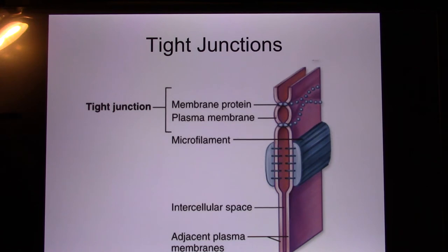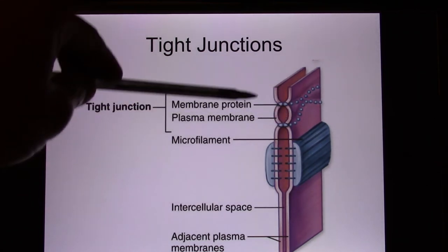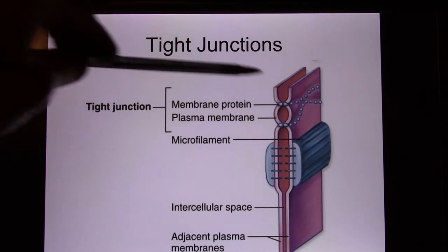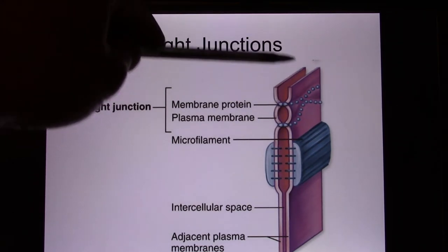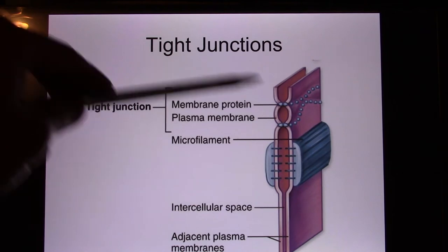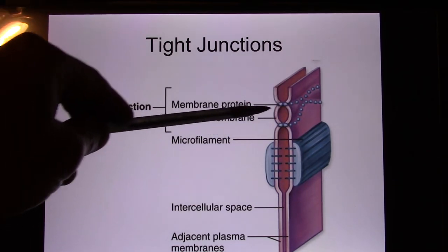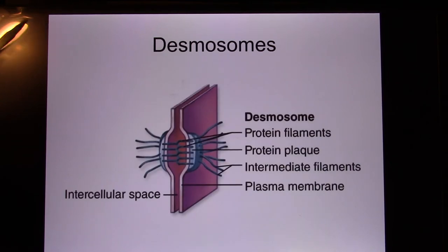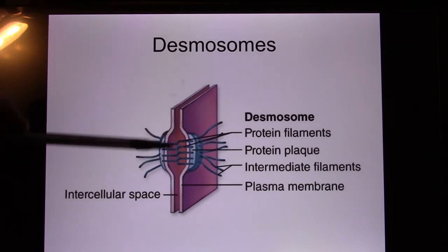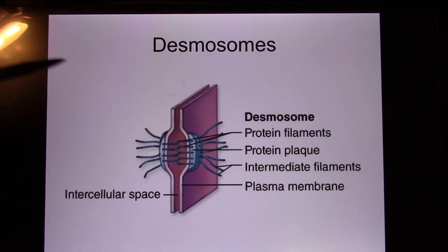The first junction: tight junction. The tight junction pins the cells together on the surface. Think about your skin — bacteria won't be able to go through the gap and enter your body because of the tight junction. The second one is the desmosome, which is like a big pin in the deeper part that pins the cells together.